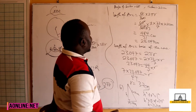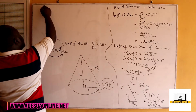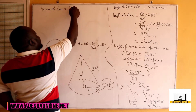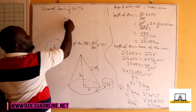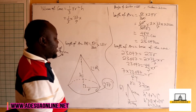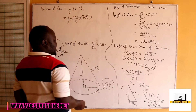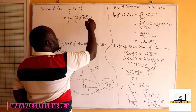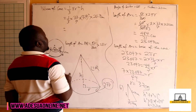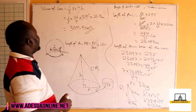The height of the cone is 21.7 centimeters. Now finding the volume: volume of a cone equals one third times pi times r squared times h, which is one third times 22 over 7 times 3.7 squared times 21.7 centimeters. This gives us approximately 304.4 cubic centimeters, which is the volume of the cone.